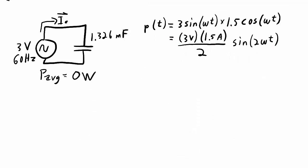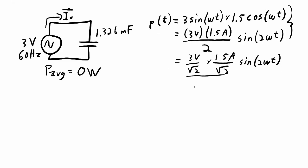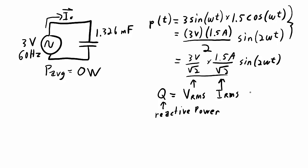I've rewritten my power equation, splitting the amplitude as the voltage times the current divided by 2. I'm going to split this up again as 3 volts over root 2 times 1.5 amps over root 2 — that root 2 times root 2 gives the half in the numerator. When quantifying power in a capacitor in an AC circuit, it's not power that gets used up, but it is important to know how much power is going into the capacitor and bouncing back out. We can identify that quantity as the RMS voltage times the RMS current. We designate this quantity Q, and we call it reactive power. It's measured in VAR, which stands for Volt Amps Reactive.